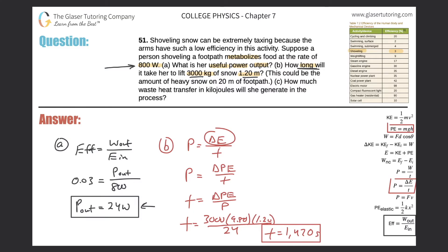And now letter C: How much waste heat transfer in kilojoules will she generate in the process? All right, so now basically what we have to realize is we're going back to letter A. Letter A said that there's a three percent efficiency, right? And she metabolized 800 watts of power from food, but she only outputted 24 of them.